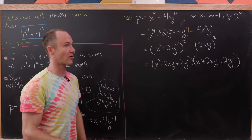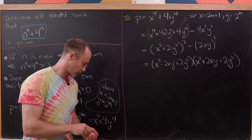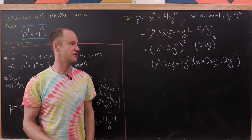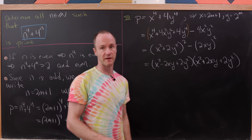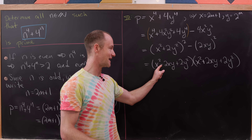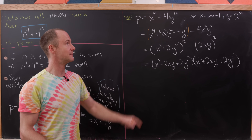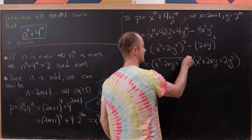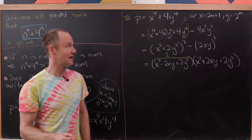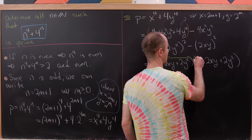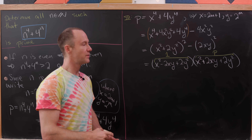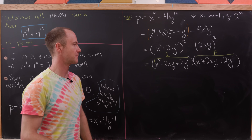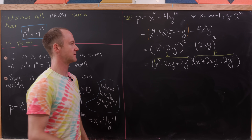This is also a factorization of our prime number p. Since it's a factorization of a prime, one of these factors must equal 1 and the other must equal the prime. The first factor is smaller than the second because it has a minus sign on the 2xy term while the other has a plus sign, and x and y are both positive. So the first factor equals 1 and the second equals p.